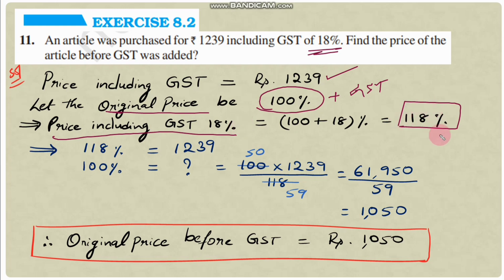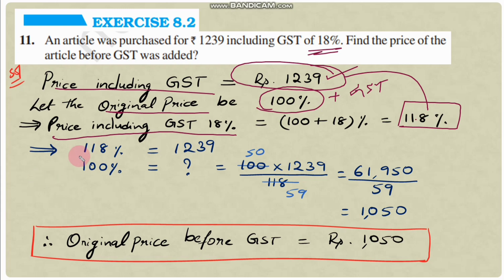So 118% = ₹1239. We need to find the original price, which is 100%. So if 118% = ₹1239, then 100% = ? We use cross multiplication again.